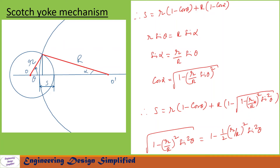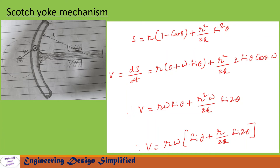This term can be simplified as 1 minus (1/2)·(r/R)²·sin²(θ). After further simplification, we get the displacement of the plunger: s = r(1 − cos θ) + r²/(2R)·sin²(θ). This is the equation to find the displacement of the plunger.